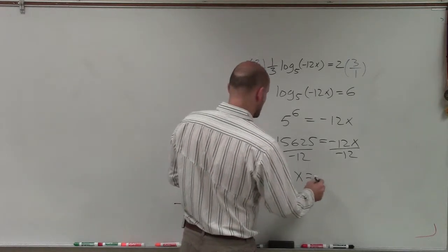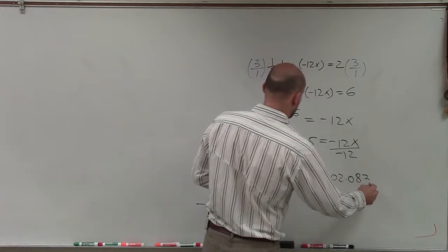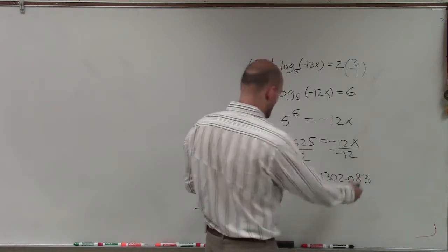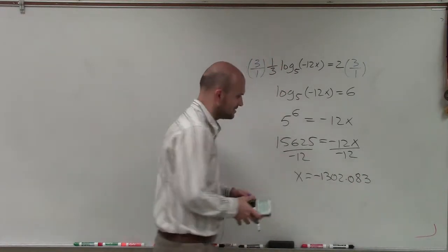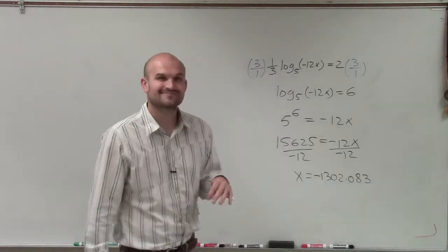And therefore, I have x equals negative 1302.083. And it looks like that's going to repeat on and on, but I'll just approximate and round it to 0.083. So there you go, ladies and gentlemen. That's how you solve this logarithmic equation. Thanks.